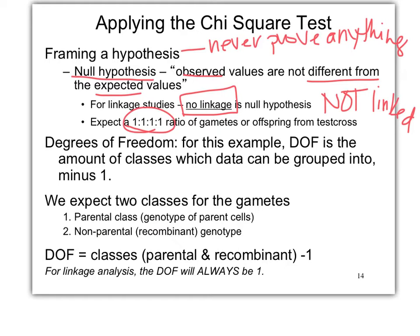Playing devil's advocate — what if we made our hypothesis 'linked'? If genes are 100% linked with no crossing over, you'd expect a 1:1 ratio, but we almost never have a situation that's all-or-nothing for crossing over. There's always something in between, so we can't define a clear expected ratio. That's why we always assume independent assortment — not linked — and then try to disprove it.